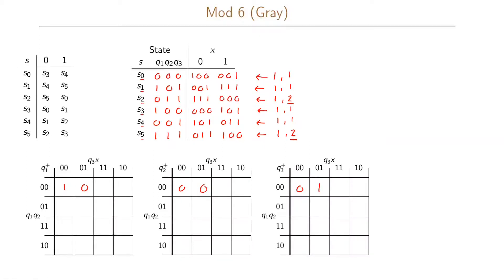For state s1 (101) with input 0 we go to 001, and with input 1 we go to 111. For state s2 (011) with input 0 we go to 111, and with input 1 we go to 000. For state s3 (100) with input 0 we go to 000, and with input 1 we go to 101. For state s4 (001) with input 0 we go to 101, and with input 1 we go to 011.